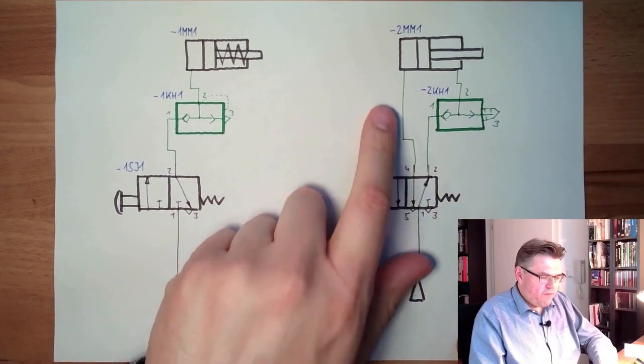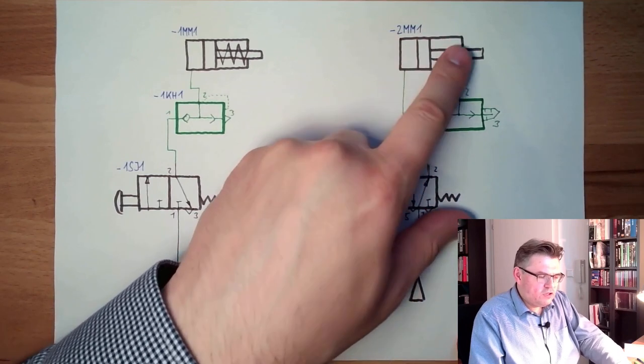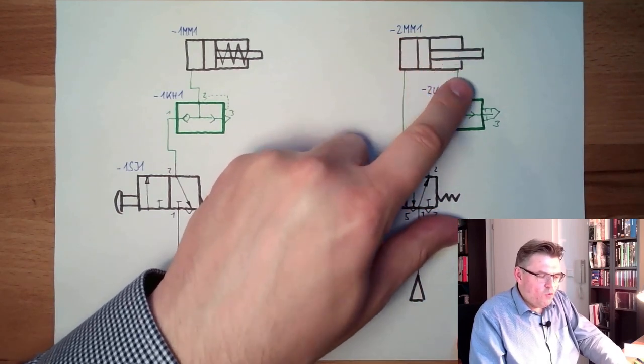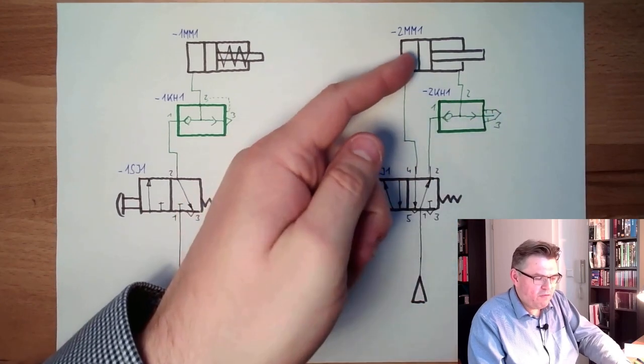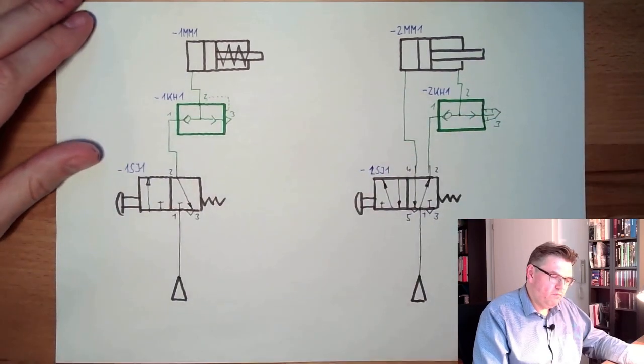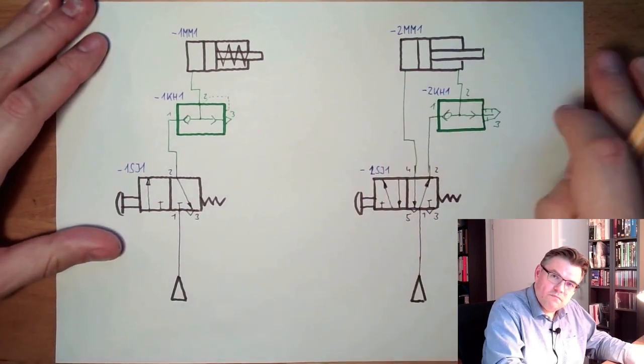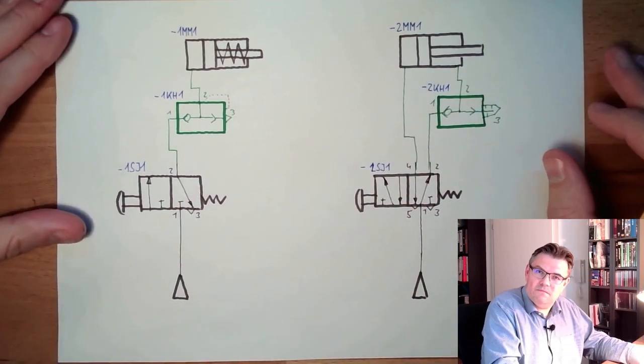So if we are traveling outwards, the air which is located inside here will quickly exhaust here. And it will travel very fast to the outer end.